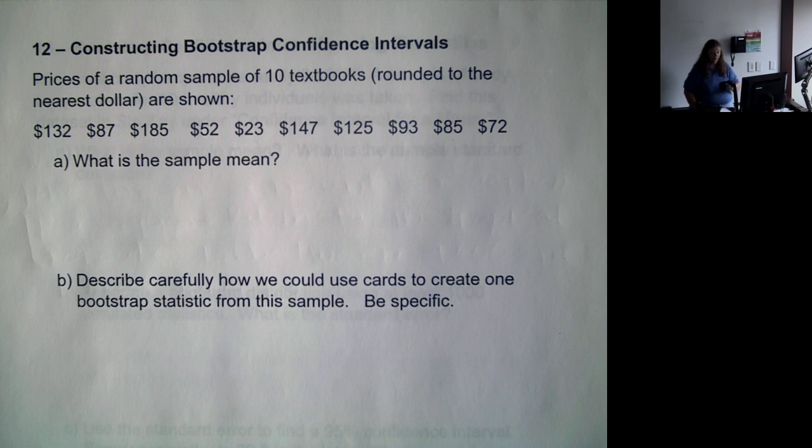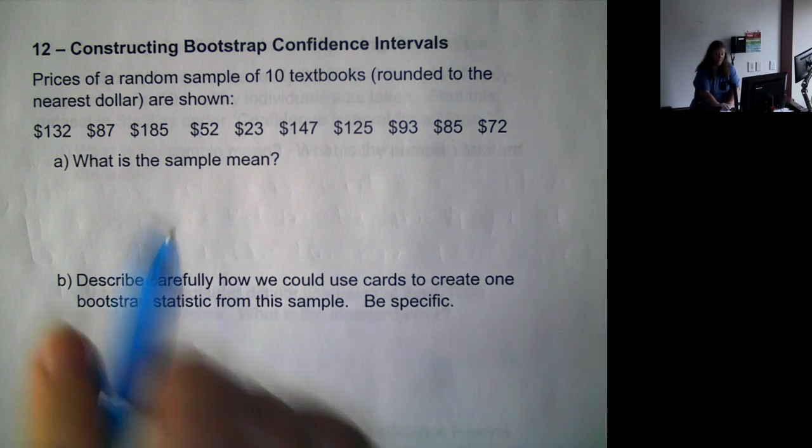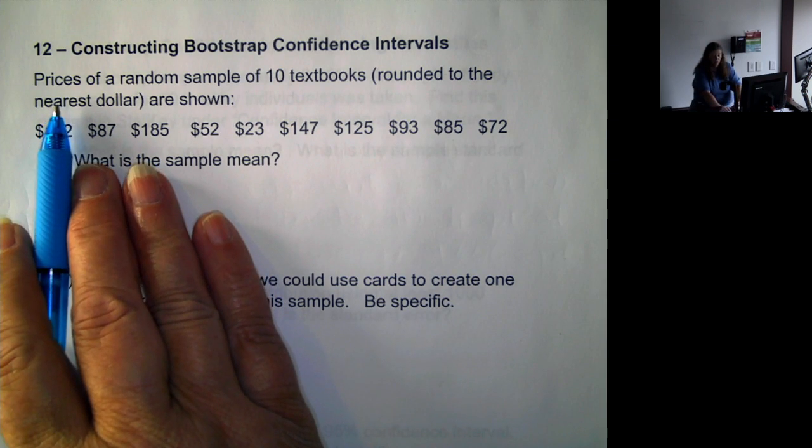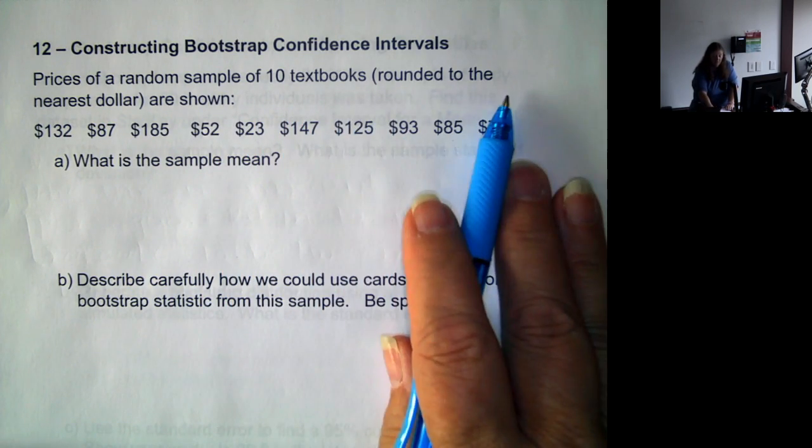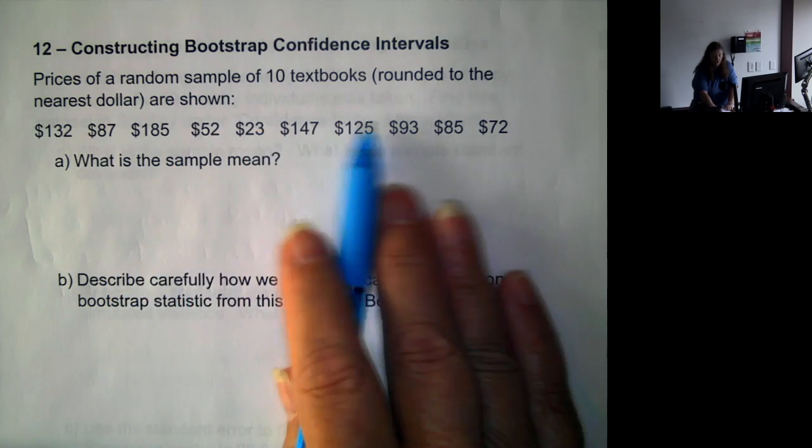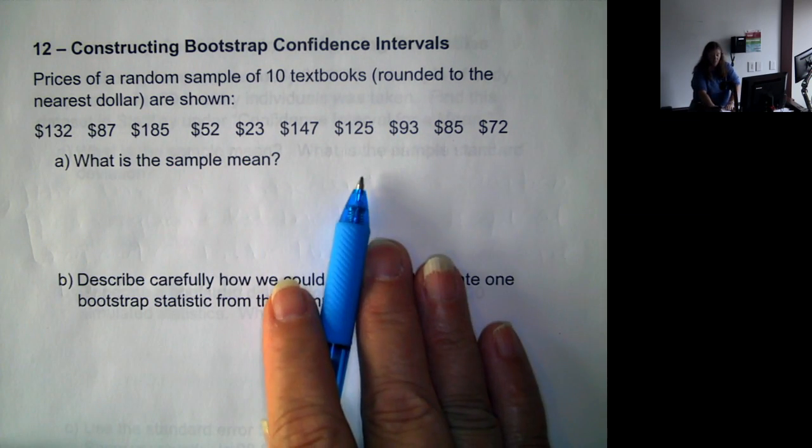Okay, now we're going to start talking about bootstrap confidence intervals. Prices of a random sample of 10 textbooks are shown. What is the sample mean?